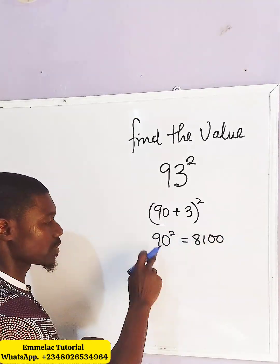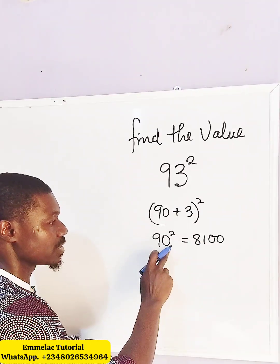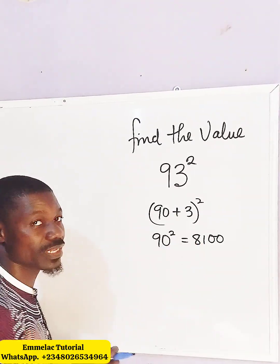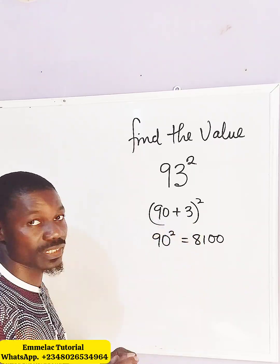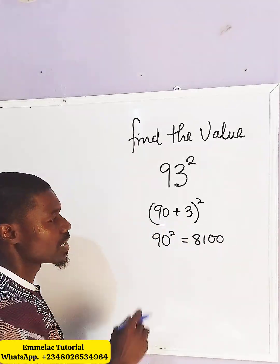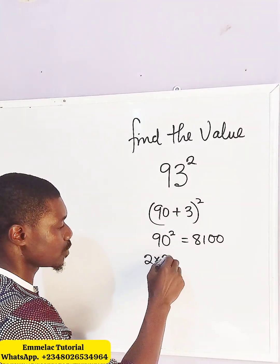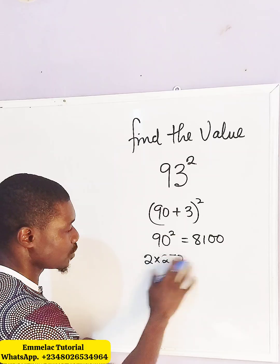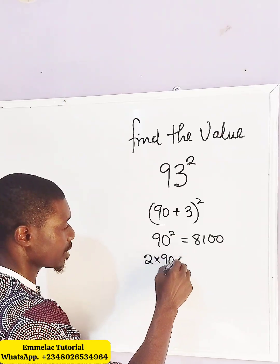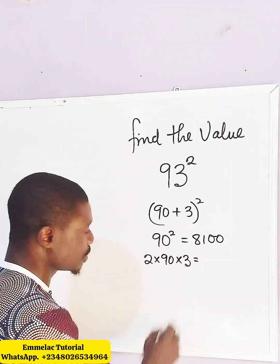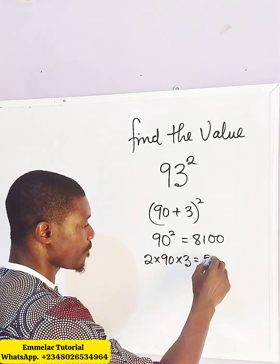Now the next step is 90 times 3, which gives us 270. Then 270 times 2, that'll be 2 times 270. Let me do it like this: 2 times 90 times 3. This gives us 540.